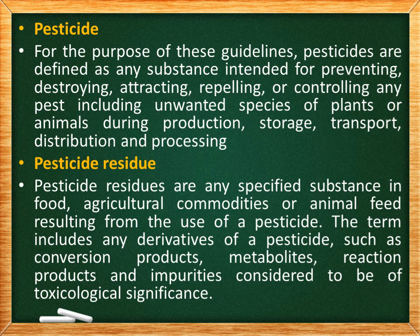According to WHO, pesticides are defined as any substance intended for preventing, destroying, attracting, repelling, or controlling any pest — including unwanted species of plants or animals — during production, storage, transport, distribution, and processing. Pesticide residues are any specified substance in food, agricultural commodities, or animal feed resulting from the use of a pesticide. The term includes any derivatives of the pesticide such as conversion products, metabolites, reaction products, and impurities considered to be of toxicological significance.